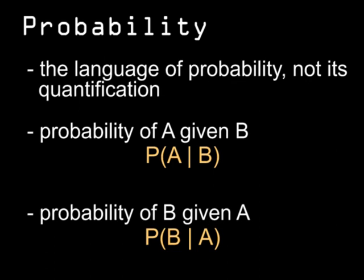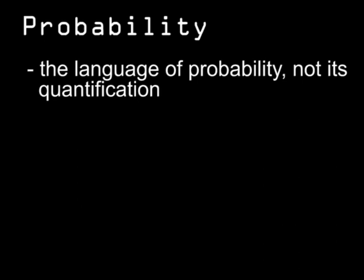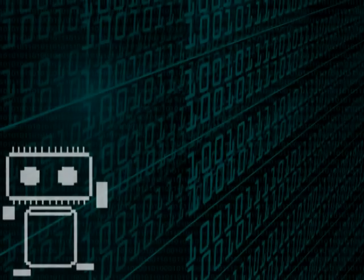Likewise, if the probability of B depends on A, then that's the probability of B given A. This is all well and good for the language of probability, but if you want to calculate probabilities, you'll need more information than the symbols I've just given you.